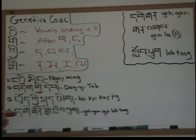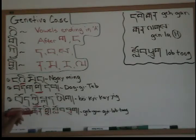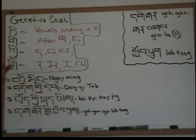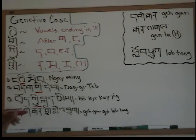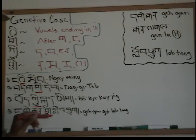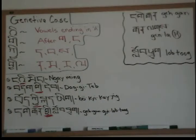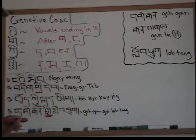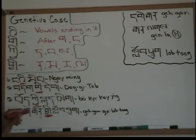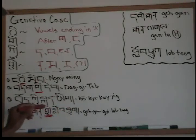Next example: gegan gi lob-tug. The next genitive particle is gi, and the rule for that is na, ma, ra, la — any word ending in those takes gi. Here is our genitive gi, because gegan ends with na. Gegan means 'teacher,' and lob-tug means 'student,' so this translates as 'the teacher's student' or 'the student of the teacher.'